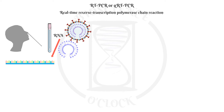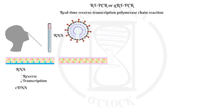If there is a viral infection at the time the sample was taken, then viral RNA will be extracted along with the RNA from the sample. The extracted RNA serves as a template for the reverse transcription that produces complementary DNA. It is called reverse transcription because the transcription process generates DNA from RNA.